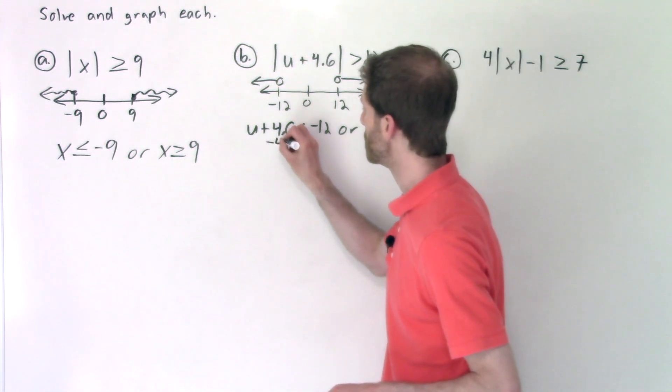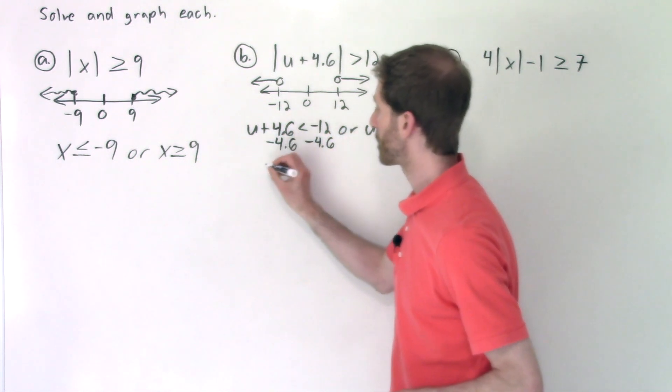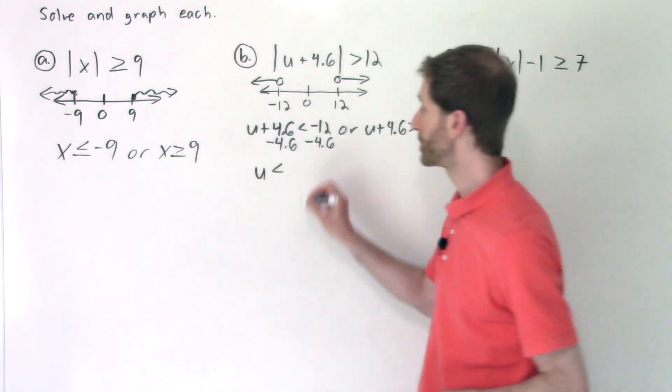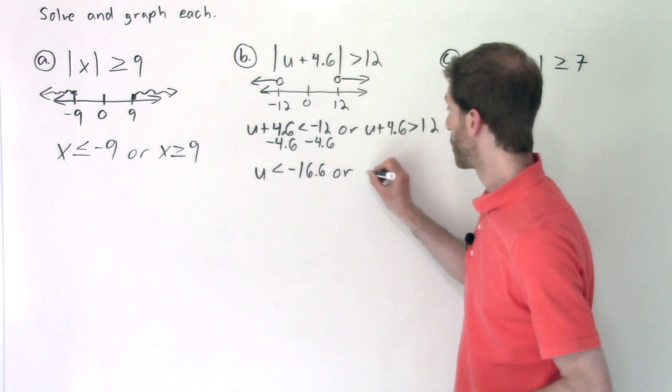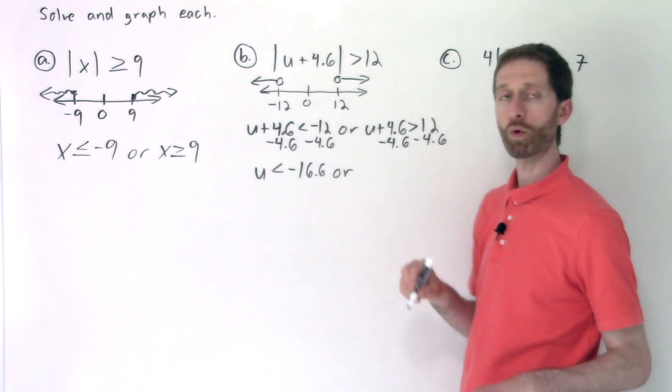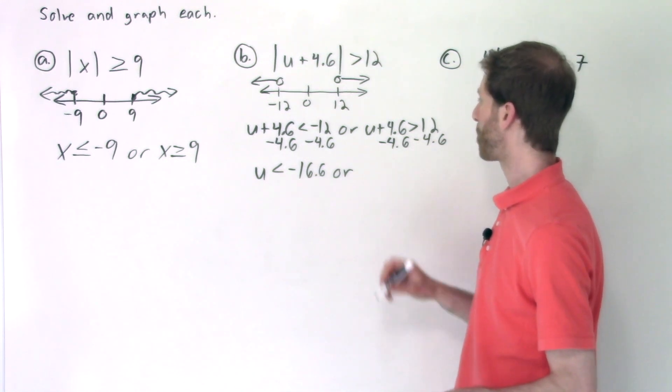So now all we have left to do is solve out these inequalities like usual. I'm going to subtract 4.6 from both sides. That cancels out the 4.6. We're left with U is less than negative 12 minus 4.6 is negative 16.6 or well, we're going to subtract 4.6 from both sides here. 12 minus 4.6, what's that going to be? I think it's going to be 7.4.